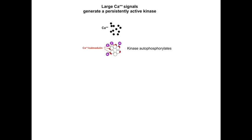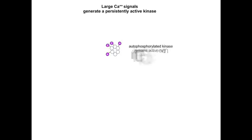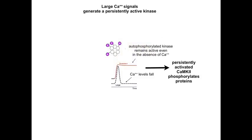Calcium is then removed from the cytoplasm, causing the calcium-calmodulin molecules to diffuse off of the kinase. But the autophosphorylated kinase remains active, even in the absence of calcium. This is called the persistent activity of CAM kinase 2. Since there is no calcium present, calcineurin is inactive. So long after calcium levels have fallen, the persistent activity allows CAM kinase 2 to exert its effects without the competing dephosphorylating effects of calcineurin, and therefore the initially large calcium signals can generate long-term potentiation.